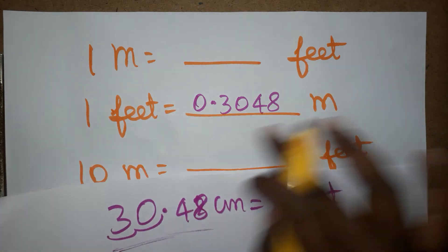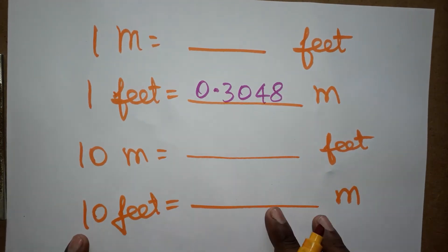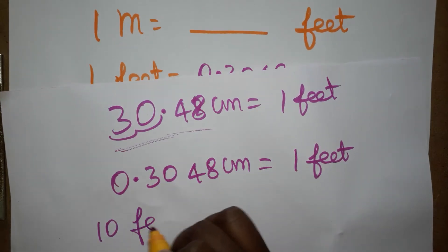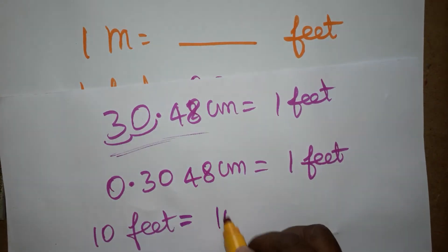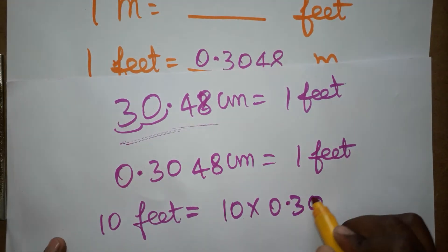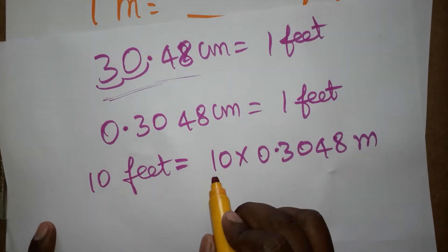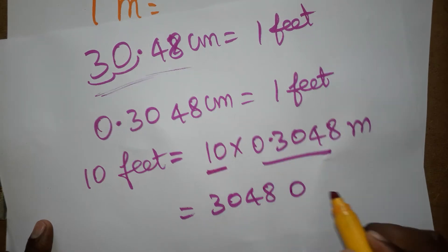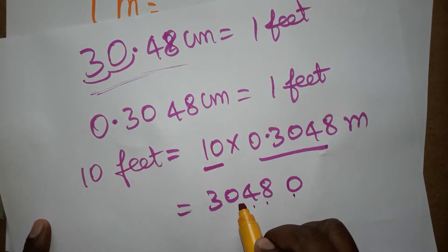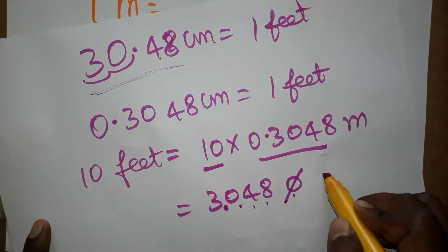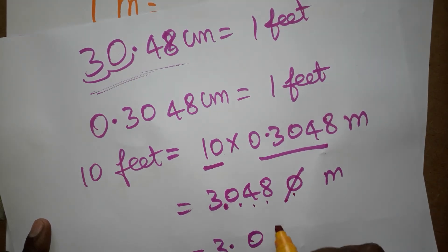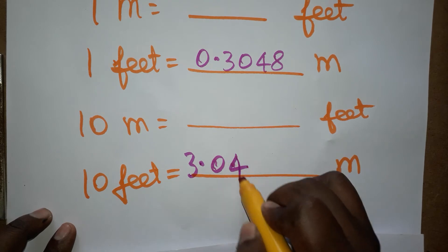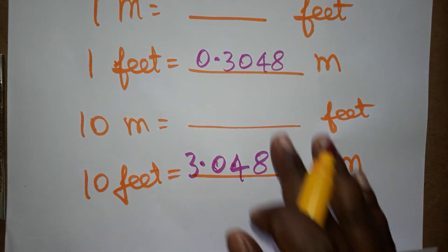So 1 foot equals 0.3048 meters. For 10 feet, we multiply by 10: 10 × 0.3048. When multiplying by 10, there are 4 decimal places — 1, 2, 3, 4 — so the decimal moves one place, giving us 3.048 meters equal to 10 feet.